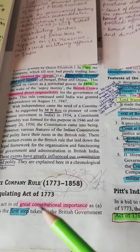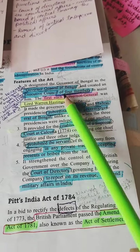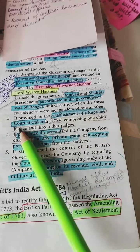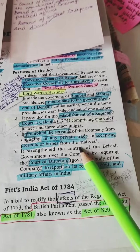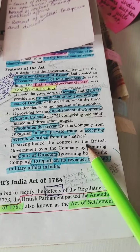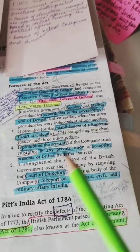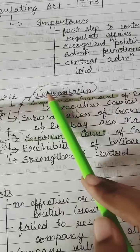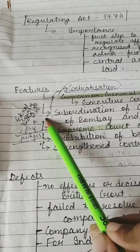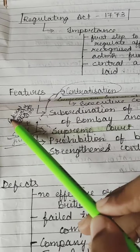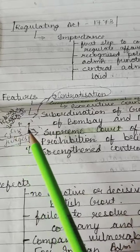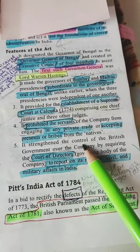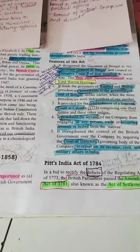This is how we need to study this chapter — not just mugging up features and advantages. The establishment of a Supreme Court at Calcutta also came from this act — the idea of a Supreme Court for the country came from here. It also prohibited servants from engaging in private trade or accepting presents or bribes. And it strengthened the control of the British government via the Court of Directors to report on revenue, civil, and military affairs. So centralization came in, the Governor General of Bengal came, and the Supreme Court concept was also taken from here.